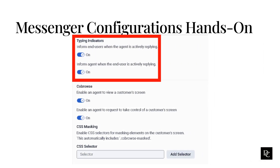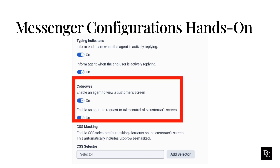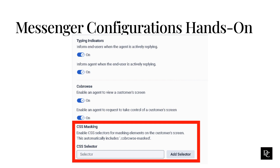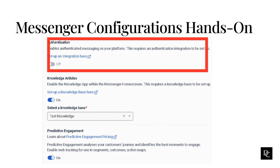Under Typing Indicators, select whether to inform the other party when a reply is being typed. Under Co-browse, select whether to allow agents to request to view a customer's screen. After you enable this option, you can also enable agents to request control of the user's screen. Additional configuration options include masking of sensitive fields and limiting fields or buttons to read only, even when the agent has control of the sharer's browser. Under CSS Masking, enable CSS Selectors for masking elements on the customer's screen. This automatically includes Co-browse masked. To allow only authenticated users to start a web messaging session with agents, under Authentication, either enable the integration, or if you do not have a valid OpenID, click set up an integration here, install OpenID Connect Messenger configuration from AppFoundry, configure it, and return to this page.